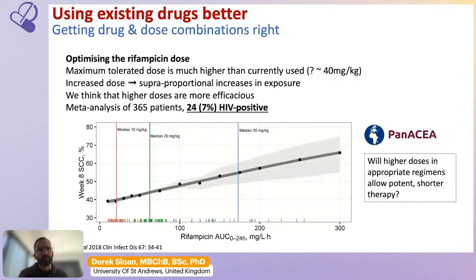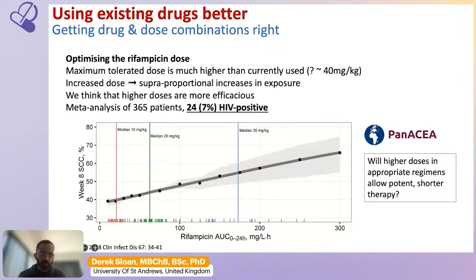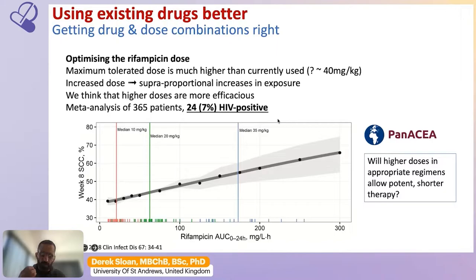A meta-analysis of 365 patients receiving higher than standard doses of rifampicin — up towards the current maximum tolerated dose of around 40 mg/kg — found the treatment was well-tolerated. Higher dosing resulted in super-proportional increases in exposure and in higher rates of eight-week sputum culture conversion from positive to negative, indicating that higher-dose rifampicin-based TB therapy may be more effective and might ultimately allow us to shorten therapy duration. However, only a small proportion of patients in this meta-analysis were living with HIV, so extrapolation requires care.